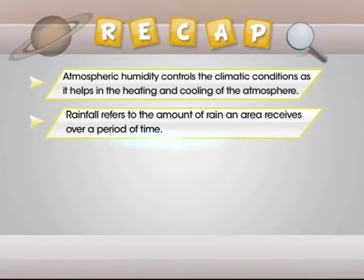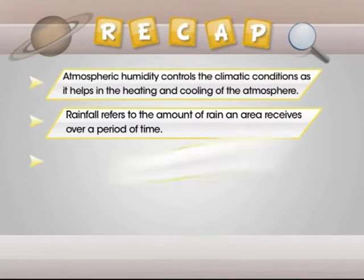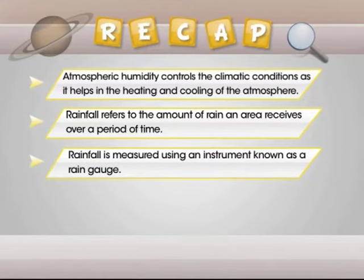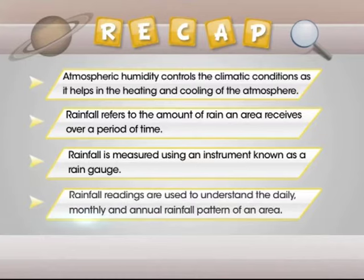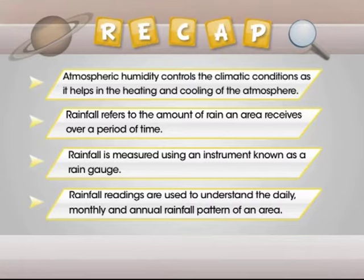Rainfall refers to the amount of rain an area receives over a period of time. Rainfall is measured using an instrument known as a rain gauge. Rainfall readings are used to understand the daily, monthly, and annual rainfall pattern of an area.